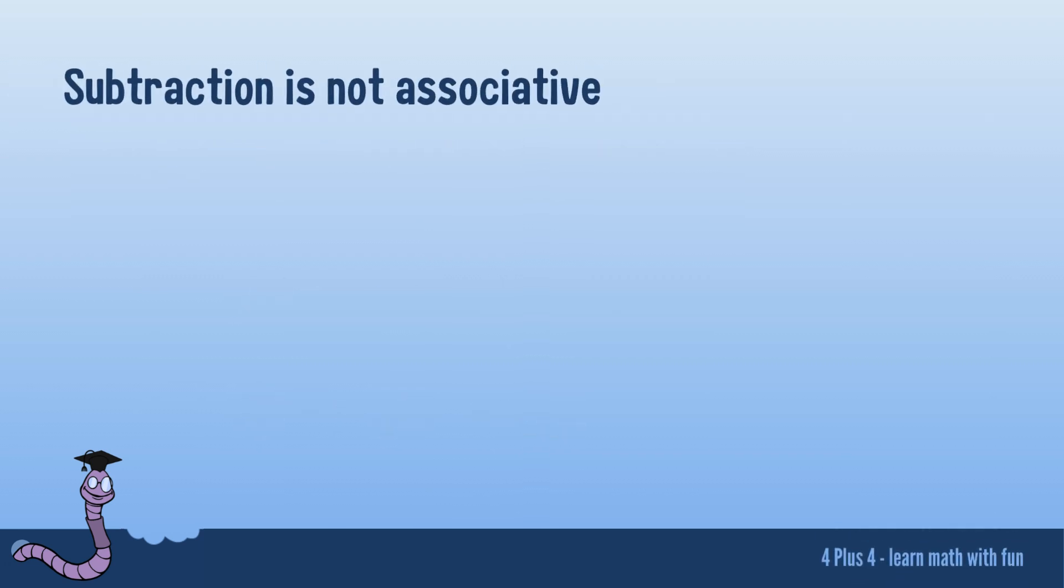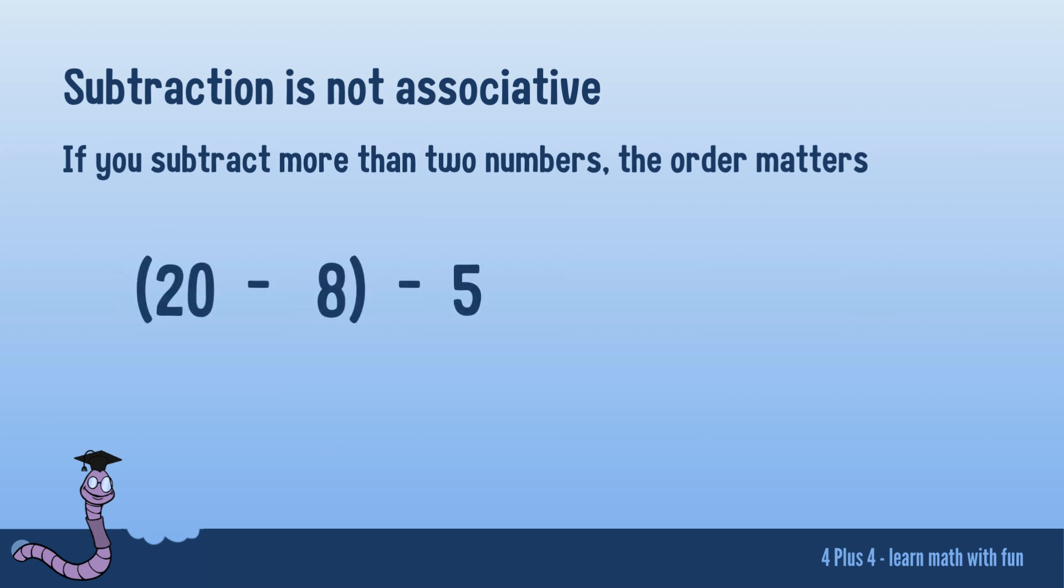Let's now explore the intriguing property of non-associativity. Unlike addition or multiplication, how you group numbers in subtraction can drastically alter the result. Consider 20, 8, and 5. Start by subtracting 8 from 20, which gives you 12. Now, subtracting 5 from this yields 7. But here's the twist: subtract 5 from 8, leaving you with 3. Then subtract 3 from 20, and you're left with 17. The outcomes change due to grouping, and that's the heart of it.